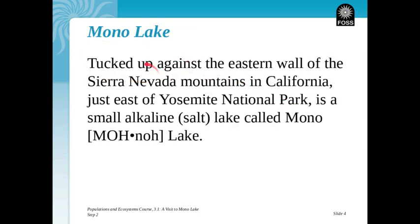I'm going to show you where it is in a second. It's in California, and it's not out near Los Angeles or San Diego or San Francisco — it's inland. It's actually in the eastern part of California, right up against Nevada, next to the Sierra Nevada mountains. And this Mono Lake is very strange because it's an alkaline lake.